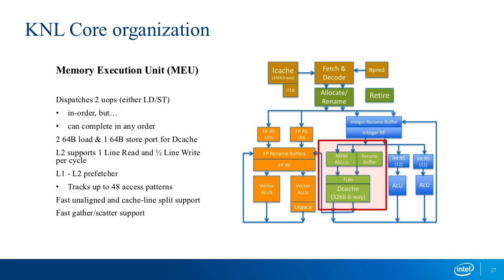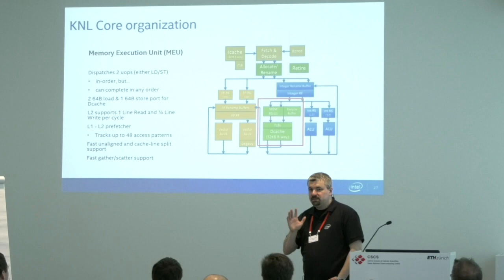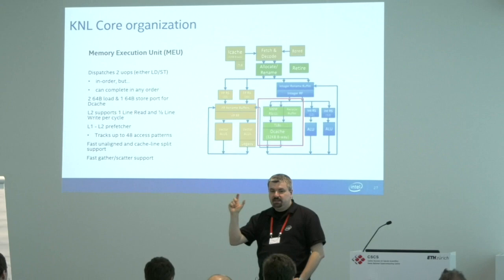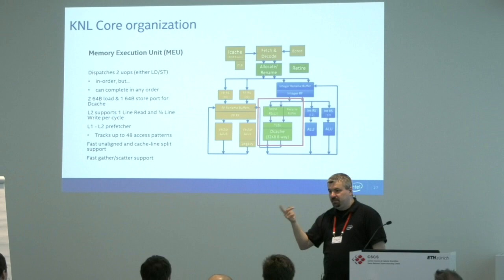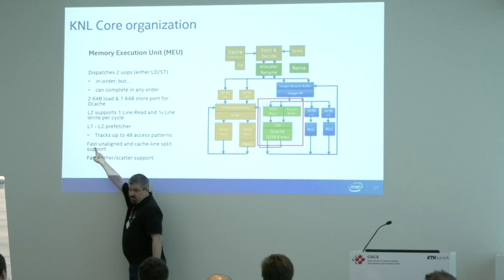There are L1 and L2 prefetchers that move data from memory into L2, then from L2 to L1. There's fast support for unaligned and cache-split loads — but 'fast' doesn't mean 'free.' For AVX-512 with 64-byte vectors, every load is potentially a split load since cache lines are 64 bytes. On Knight's Corner the split-load penalty was about 5x; here it's less painful but still costs something. Align your data to cache lines whenever you can.